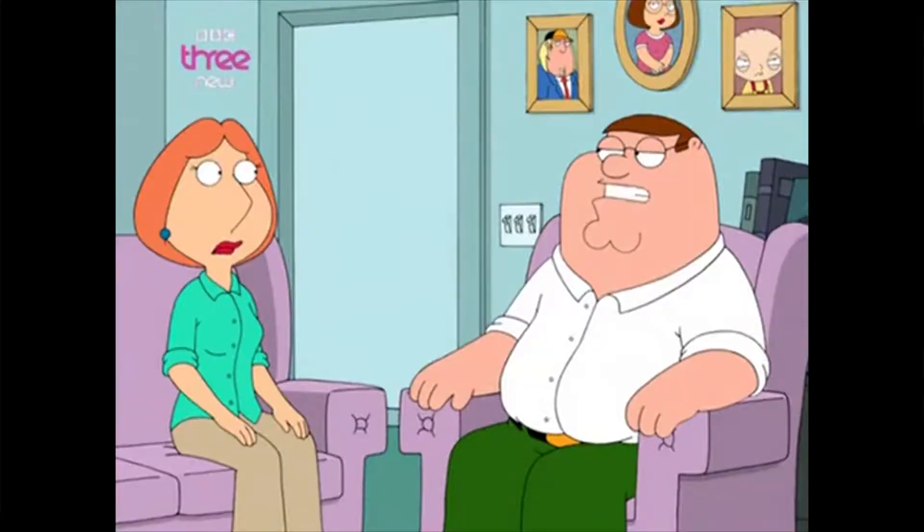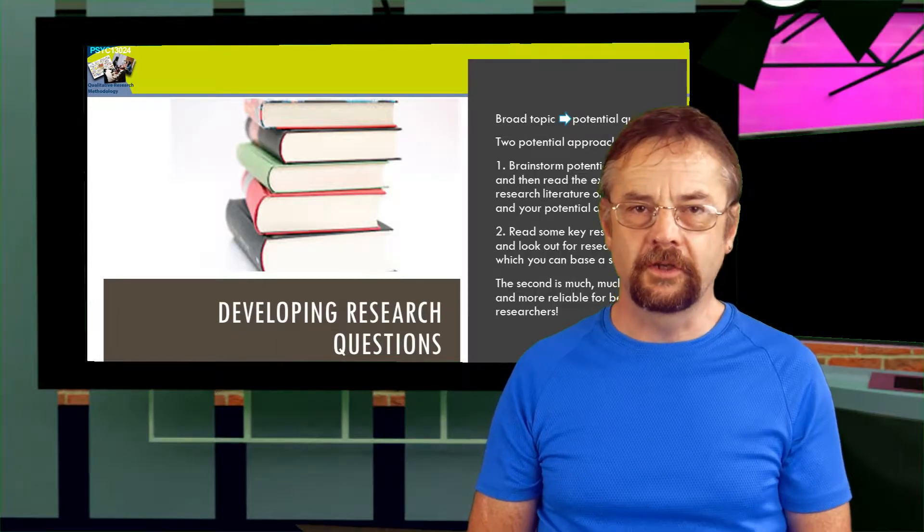Another issue with honors research is time. For honors, you typically only really have around seven months to do the research. If you're engaging in ethically sensitive research, you might not have enough time — it takes a lot of time. Typically it might take you two or three months just to get the initial ethical clearance, and if you've got seven months to complete the project, you've lost a whole chunk of time.